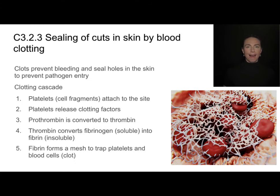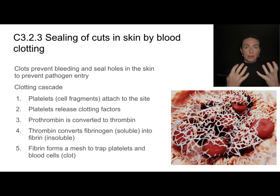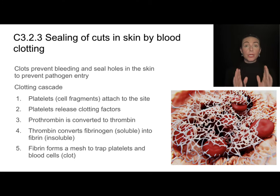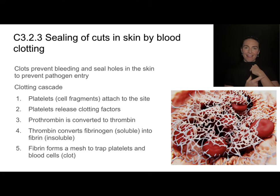Now let's say I get a cut in my skin. That can be really bad for two reasons: one, I don't want to bleed to death, but two, I don't want to create an opportunity for pathogens to make their way into my bloodstream. I need to form a clot really quickly to plug up that hole. And so this whole sequence of events called a clotting cascade is going to happen after we get a cut in our skin.